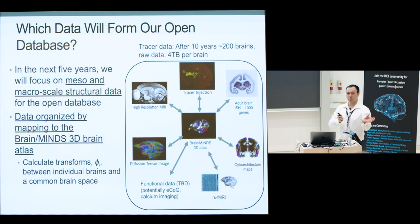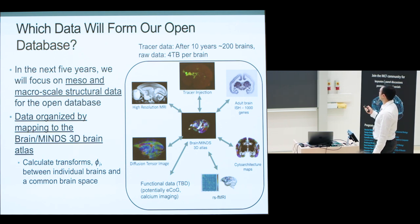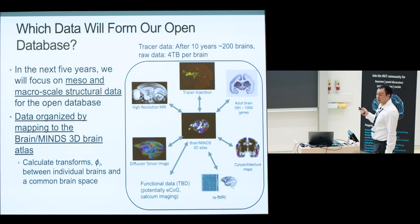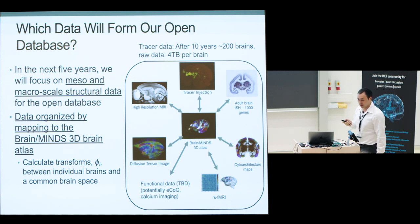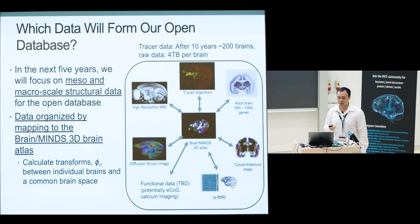Computationally, there's a transform that will take you from the individual data to this common space. Here is a summary of the types of data we have been collecting and organizing. We have a large amount of tracer injection data. As an example of data sizes, the tracer injection studies use the tissue SITE system, with a goal of around 200 brains after 10 years — each brain's raw data is four terabytes.